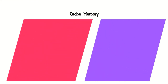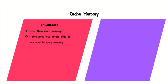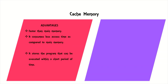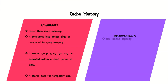Cache Memory Advantages: It is faster than main memory and consumes less access time compared to main memory. It stores programs that can be executed within a short period of time, and stores data for temporary use. Disadvantages: It has limited capacity and is very expensive.